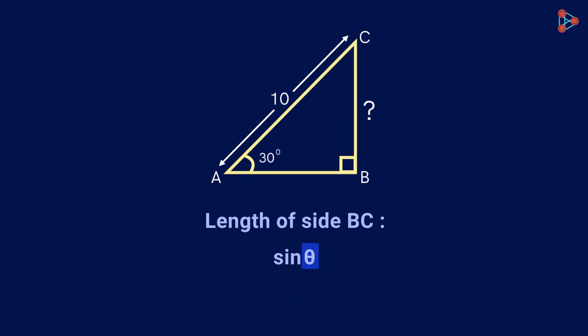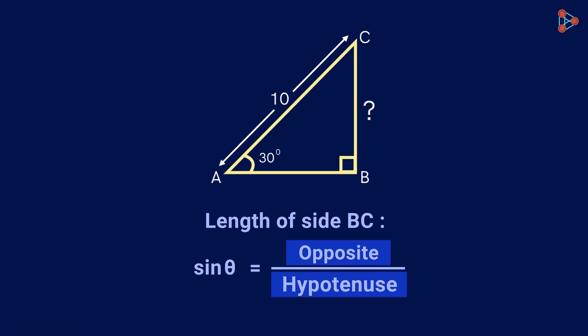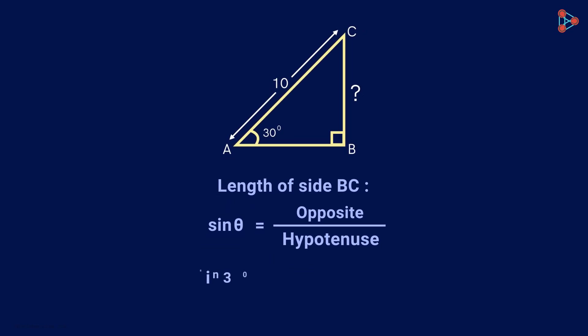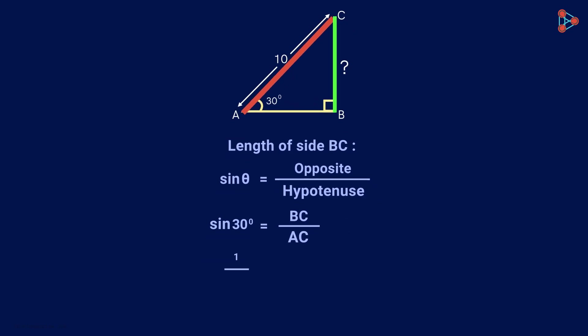For an angle theta, the value of this function gives us this ratio for a triangle. It is side opposite to angle theta over the hypotenuse. So here we will have sine 30 is equal to opposite side BC over the hypotenuse AC. With this, we can easily find the length of side BC.